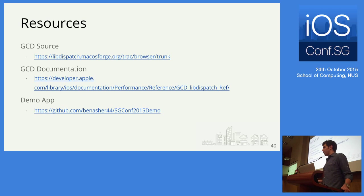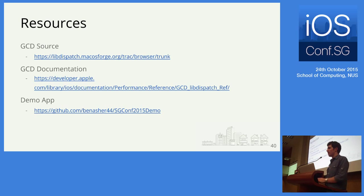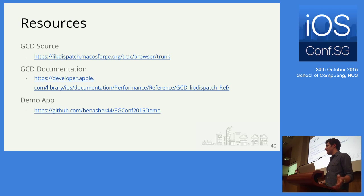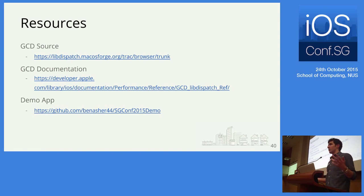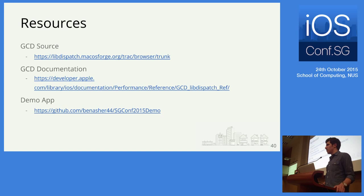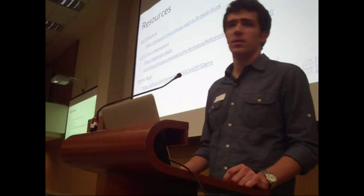Regarding ReactiveCocoa: I haven't worked with it personally beyond reading the README. As for performance compared to GCD — GCD is written in C so it has pretty low overhead. According to WWDC talks, dispatch_queue_create is very cheap to create and destroy, so it's generally a low-overhead API. Thank you.